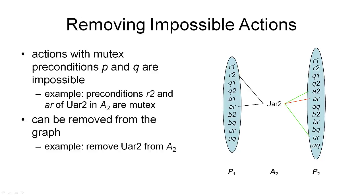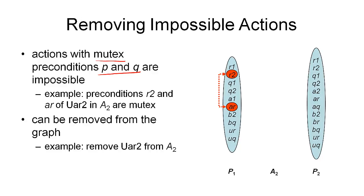Before we move on with the GraphPlan system, there is one further refinement to the planning graph. Suppose we have two propositions P and Q that are mutex and are preconditions for the same action — in this example, action UAR2 has two preconditions R2 and AR, and they are mutually exclusive. That means we can never execute action UAR2 in that action layer. What we do in this case is simply remove the node representing that action and all its edges from the planning graph — we remove UAR2 from A2.